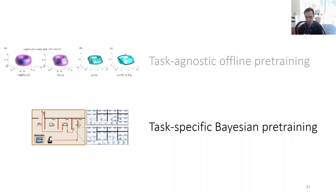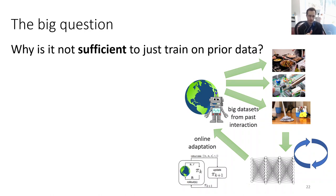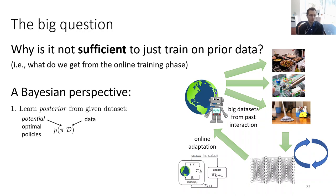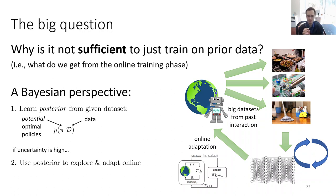I talked about task-agnostic methods for safety — now let me talk about task-specific methods. If you're going to use offline RL and train a policy for a particular task, why is it not sufficient to just train on prior data? Why do you actually want to do some online adaptation? Taking a Bayesian perspective: what we learned via offline RL is a posterior from a given dataset — for example, a probability distribution over optimal policies given the dataset. For a finite-sized dataset, we have uncertainty about what the optimal policy is. If uncertainty is high, it makes sense to take this posterior and then explore and adapt online to resolve remaining uncertainty.